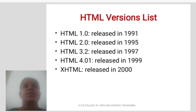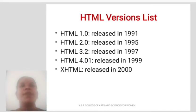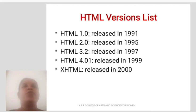HTML Version List: HTML 1.0 released in 1991, HTML 2.0 released in 1995, HTML 3.2 released in 1997, HTML 4.01 released in 1999, and XHTML released in 2000.